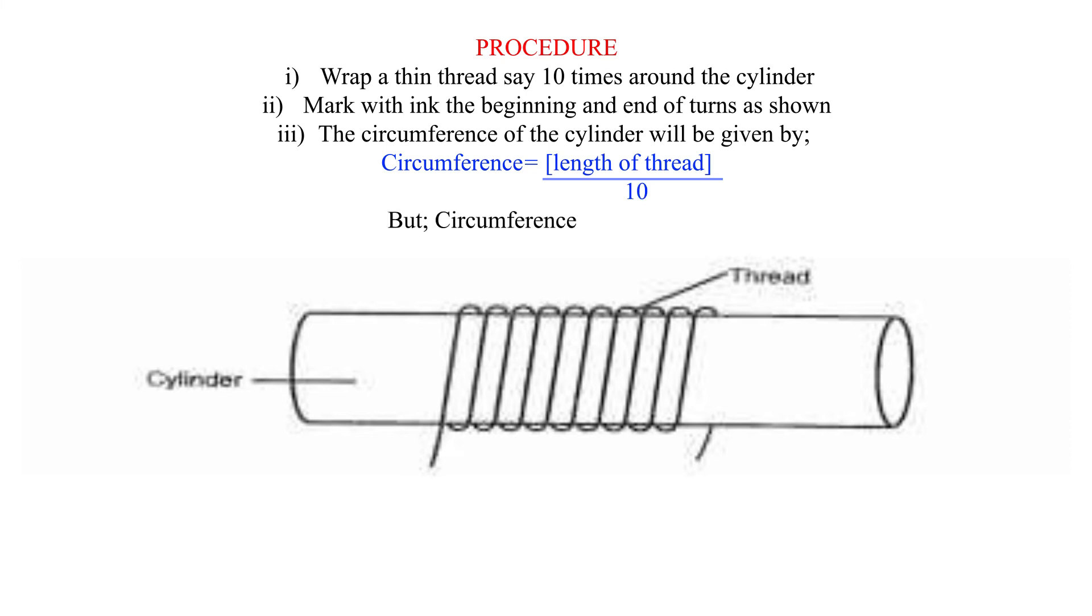But, circumference equals pi D or 2 pi R, where R is the radius of the cylinder.